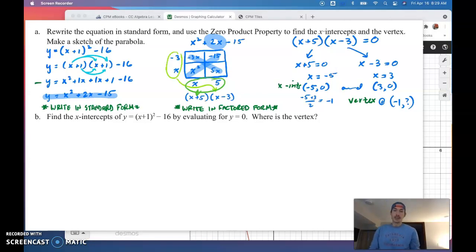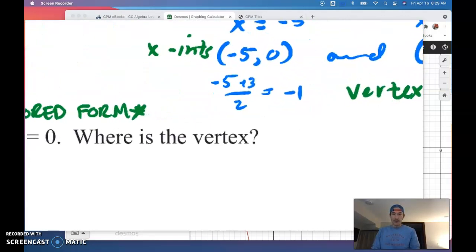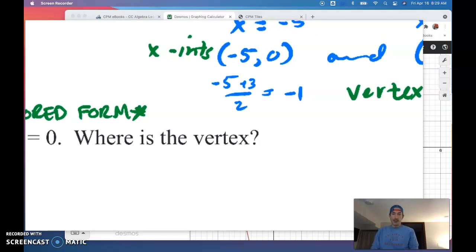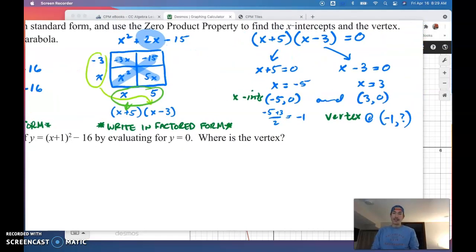All right. This is the last thing I asked you to do. I asked you to set that product equal to zero. I asked you to set each factor equal to zero, and then solve to find your X-intercepts. So, I went ahead and did that here. I've got two X-intercepts, negative five, zero, and three, zero.